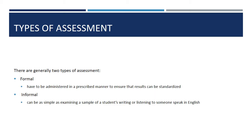There are generally two types of assessment: formal and informal. Formal assessments have to be administered in a prescribed manner, and examples you're probably familiar with are any standardized test, exam, questionnaire, or procedure. An informal assessment is, like it suggests, more informal. This can be as simple as examining a little piece of student writing, or just listening to someone speak in English and taking note of their challenges, weaknesses, or areas of strength.